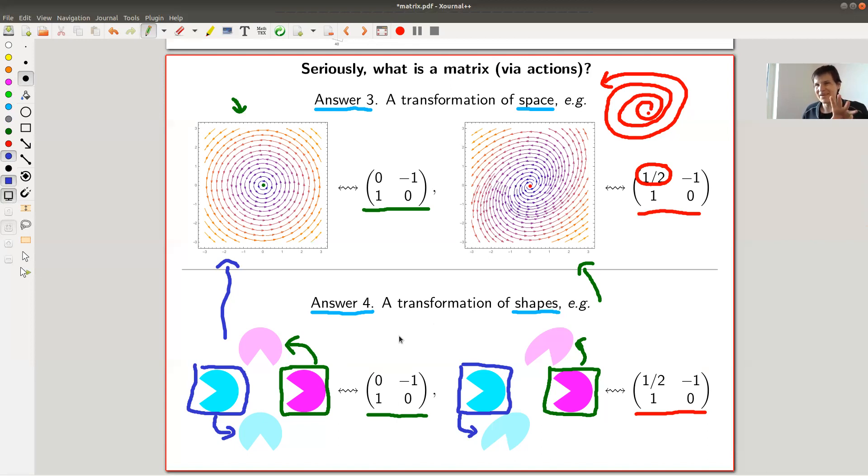Whether it is on the vector space itself, like a transformation of space like answer three, or whether it is a transformation of certain shapes in your vector space, like the Pac-Man or vectors. This basically comes from matrices do something to vectors, and the little shapes correspond to some chosen vector system.